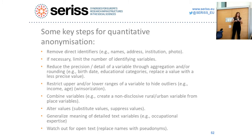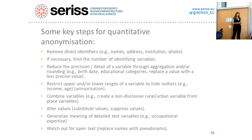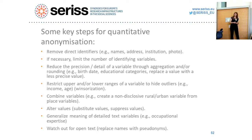You can combine variables to create new typologies, substitute or suppress values if there are no consequences for the research, and when dealing with text you can generalize the meaning — for example, if someone has a very specific job, describe it in a broader category like 'high-skilled job' rather than providing the exact occupation.